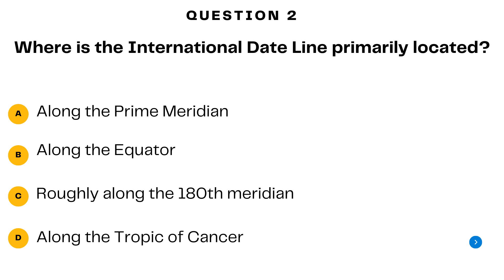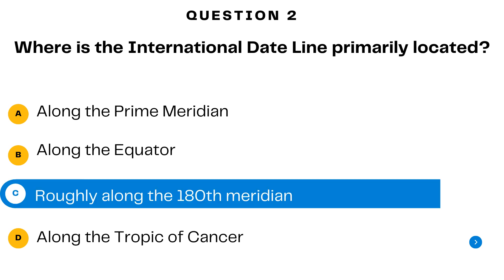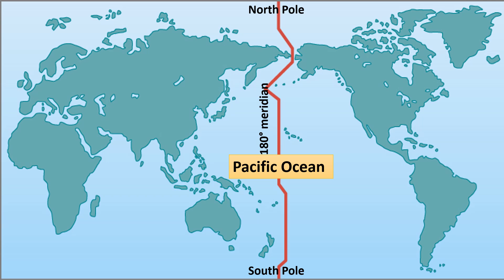Question number two. Where is the international dateline primarily located? A. Along the prime meridian. B. Along the equator. C. Roughly along the 180 degree meridian. Or D. Along the Tropic of Cancer. The answer is C — roughly along the 180 degree meridian. The international dateline is primarily located along the 180 degree meridian in the middle of the Pacific Ocean.